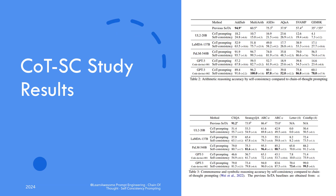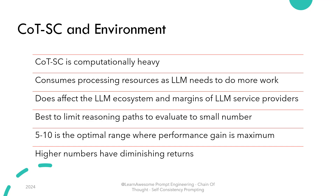Note the results for arithmetic reasoning and symbolic reasoning: the approach is much more performant than regular chain of thought for arithmetic reasoning, and reasonably more performant in symbolic reasoning. Chain of thought coupled with self-consistency also improves performance for smaller models where plain chain of thought may not improve or can even degrade results. The only downside is it is computationally heavy, which affects the large language model ecosystem providing you the service — the more cost they bear, the more services move to the paid realm. The creators suggest limiting reasoning paths to five to ten, as this is the optimal range where most performance gain is seen, with any higher number yielding diminishing returns.